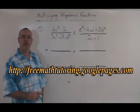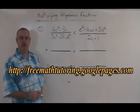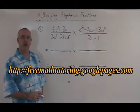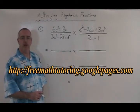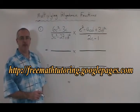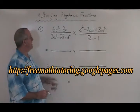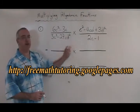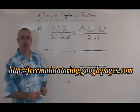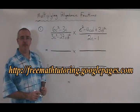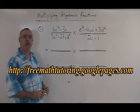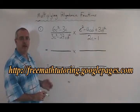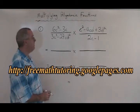In our factoring and algebraic fractions course, we have to learn how to multiply algebraic fractions. Example 1 has two algebraic fractions that are being multiplied. The first step is to factor everything completely.